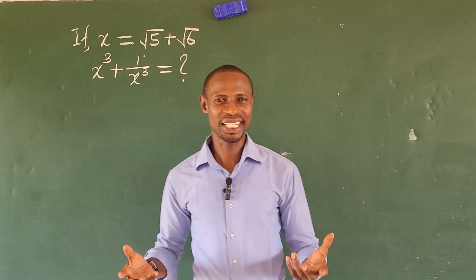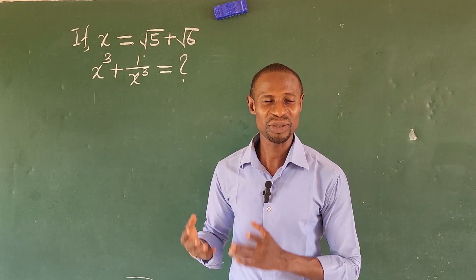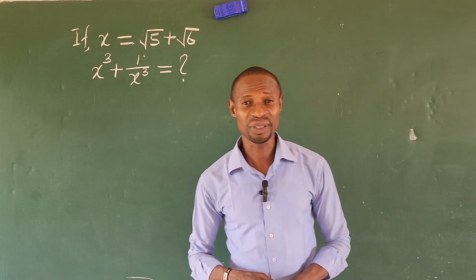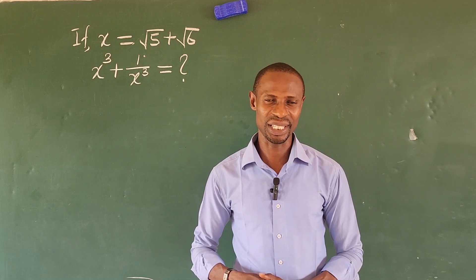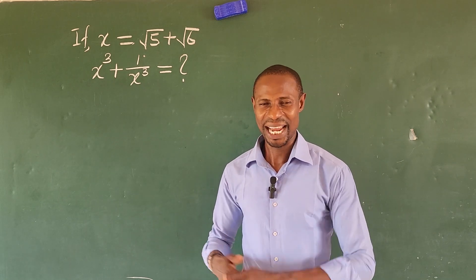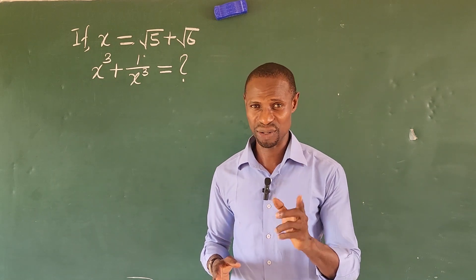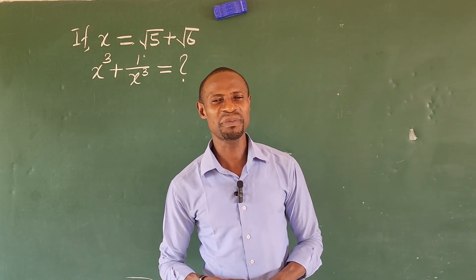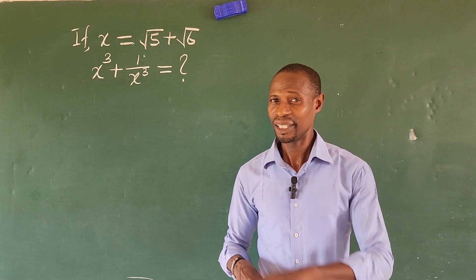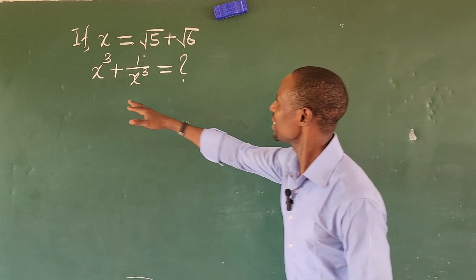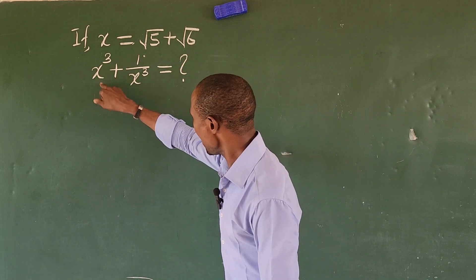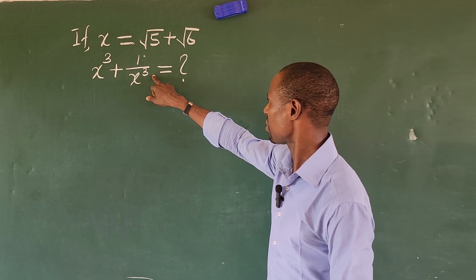Hi everyone, welcome to today's challenge. Today we have a US Math Olympiad question. At first when I saw the question I thought I would get a solution easily, but when I dove into solving it I found I was wrong. What would you say — there's no mathematical challenge without a solution? Well, some mathematical challenges that do not have a solution — not having a solution is a solution itself. The question reads: if x is equal to root 5 plus root 6, then x to the power of 3 plus 1, all over x to the power of 3, will be equal to what?